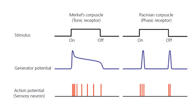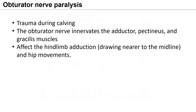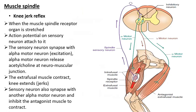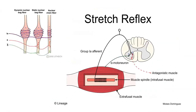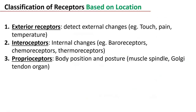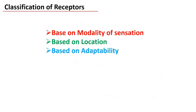So this is about the classification of receptors. We have discussed stress receptors, modality of sensation, location, and adaptability. Thank you.